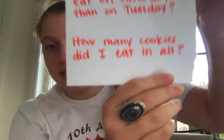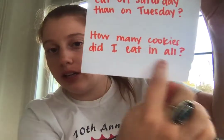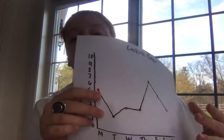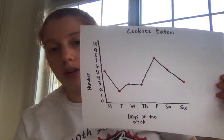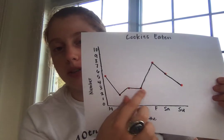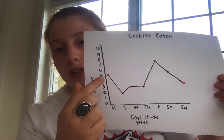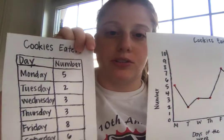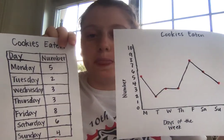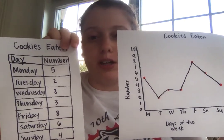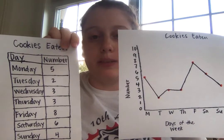Our last question says: how many cookies did I eat in all? There's that clue word "in all" that tells us we're going to be doing addition. So in order to find out how many cookies I ate altogether, I need to add all of my numbers together. We can look on our chart too: five plus two plus three plus three plus eight plus six plus four.